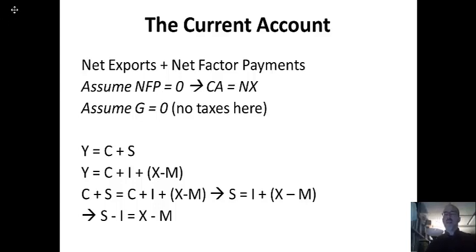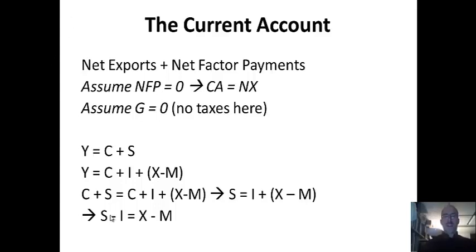I'm going to assume here that net factor payments are zero, so the current account is equal to net exports. I'm also going to assume that government spending is zero — no taxes and no government spending. Without any taxes, every dollar earned for income has to equal consumption plus saving. There are basically two places to put your money: consume it or save it.